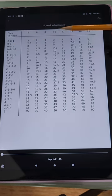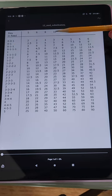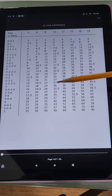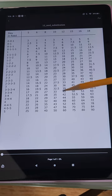You can also see that with a 10-dent reed, you can slay three ends per dent and get 30 ends per inch. So that's pretty handy.